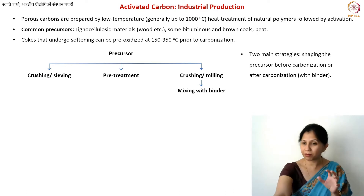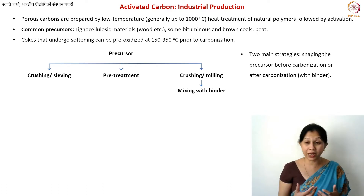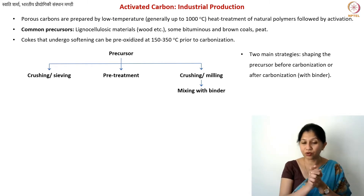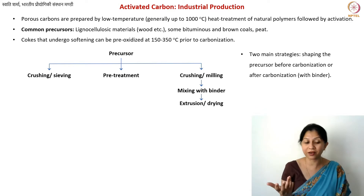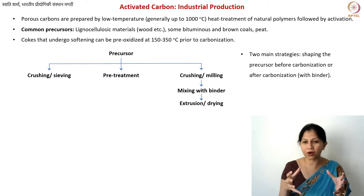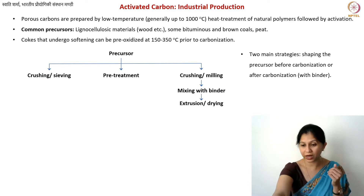Now let's talk about the third pathway where we do the crushing and milling — we have a powder of the precursor material. At this stage you mix it with a binder. This binder is often a resin; you use reasonably small quantities to hold it together and make pellets. Then you might use extrusion techniques — as we also use in graphite-related manufacturing for plastic materials. You take the mixture of cellulosic material and binder, perform extrusion to give the desired shape, and then do drying or even cross-linking depending on the binder used.